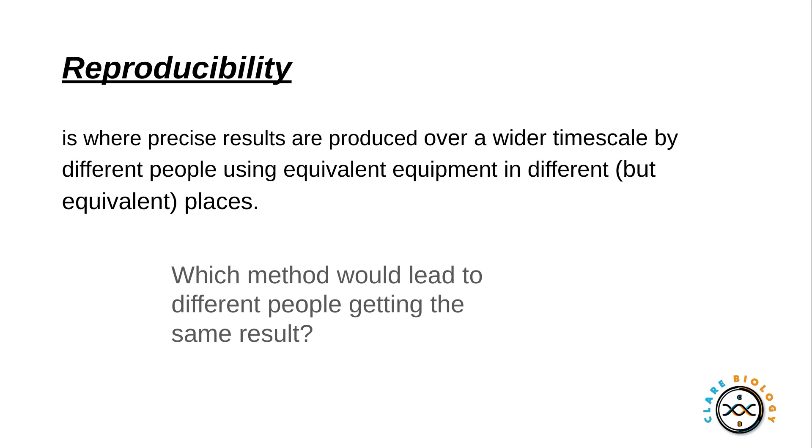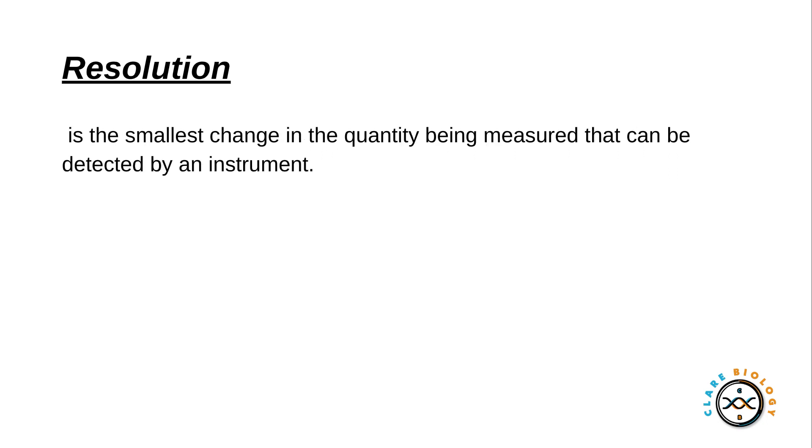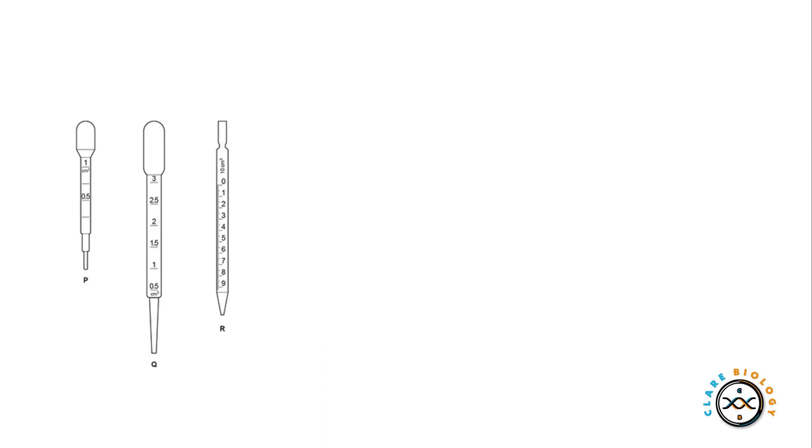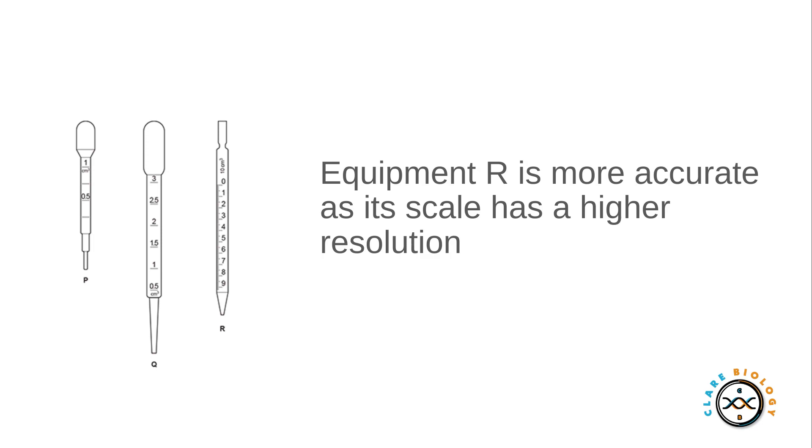Resolution. This is the smallest change of the quantity being measured that can be detected by an instrument. And we can look at this in terms of microscopes which fits in quite nicely. So the microscope that has the highest resolution is the TEM. We've also got things like this that come up in the exam. In terms of, I think the question was asking you which one's most accurate. The reason why equipment R is most accurate is because the scale has a higher resolution. So it's linking several terms in here to get that marking point.